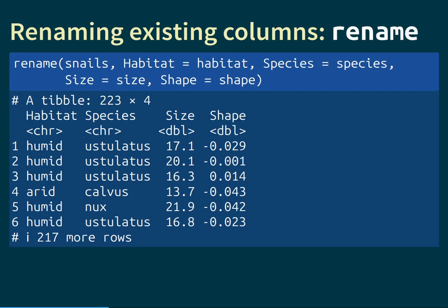For example, if we want to capitalize each of the column names — make them start with a capital letter — we can write Capital H Habitat equals lowercase habitat, Capital S Species equals lowercase species, and so on. This replaces the lowercase names with the uppercase ones, and as you see in the output, each column name now starts with a capital letter.